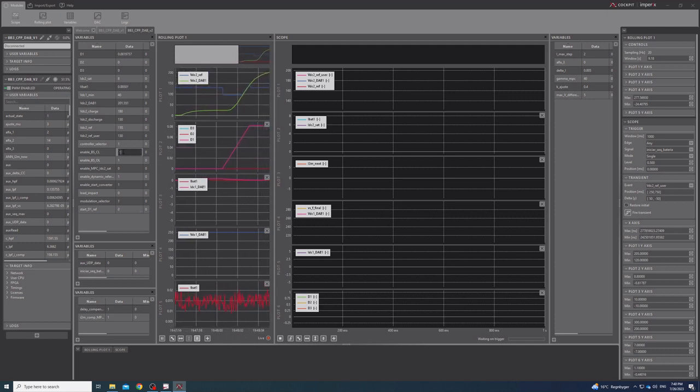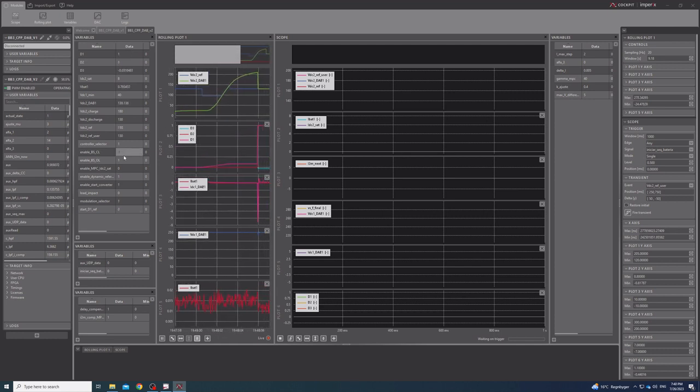Then, the closed loop is enabled and the model predictive control takes command of the converter's operation.